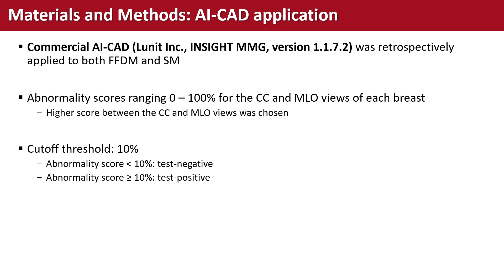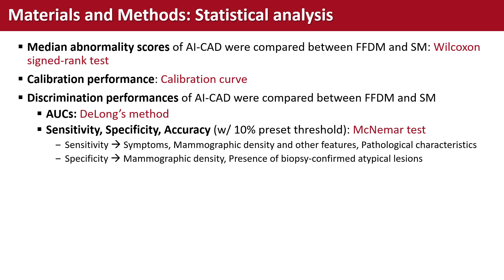With the cutoff threshold set at 10%, abnormality scores lower than 10% were considered test negative, while scores of 10% or greater were considered test positive. The median abnormality scores were compared between digital and synthetic mammography using the Wilcoxon signed-rank test. Calibration performance was evaluated using calibration curves, and discrimination performances were compared using the DeLong method. Sensitivity, specificity, and accuracy with the 10% threshold were compared using the McNemar test.